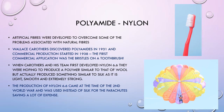Artificial fibres were developed to overcome some of the problems associated with natural fibres. A scientist called Wallace Carruthers discovered polyamides in 1931 and commercial production started in 1938 — the first commercial application was the bristles on a toothbrush. When Carruthers and his team first developed nylon 6-6, they were hoping to produce a polymer similar to wool, but actually produced something similar to silk, as it is light, smooth and extremely strong. The production of nylon 6-6 came at the time of the Second World War and was used instead of silk for parachutes, saving a lot of expense.